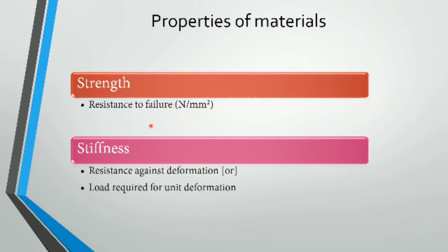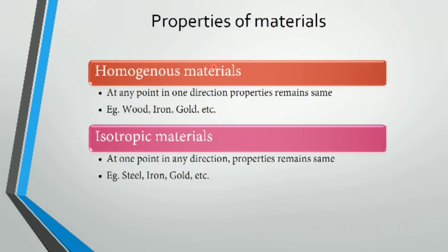Next is stiffness. Stiffness is deformation-resisting capacity. If strength is failure against resistance, then stiffness is deformation against resistance — the ability to resist deformation.